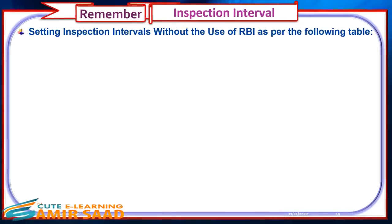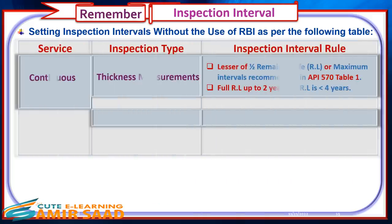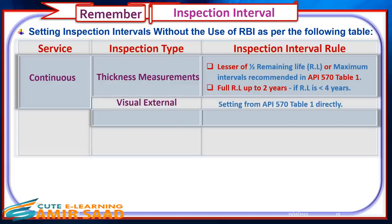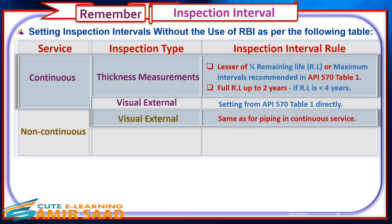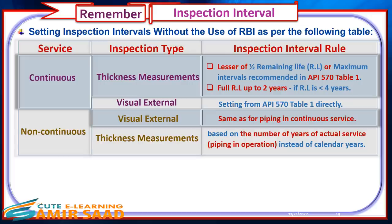Inspection Interval Reminder: Setting inspection intervals without the use of RBI — for continuous service, the thickness measurement inspection interval is the lesser of one-half remaining life or the maximum intervals recommended in API 570 Table 1, or full remaining life up to two years if remaining life is less than four years. The visual external inspection interval is set from API 570 Table 1 directly. For non-continuous service, the visual external interval is the same, but thickness measurement interval is based on actual years of service rather than calendar years.